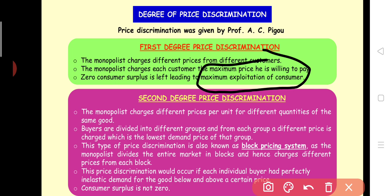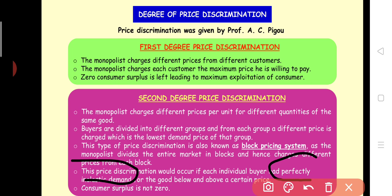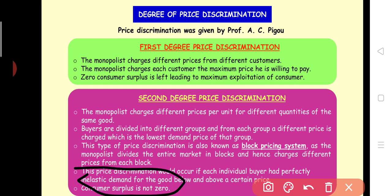Second degree price discrimination charges a different price per unit for different quantities — like a lower price for bulk purchase. This is called block pricing because the market is divided into blocks based on high demand and low demand. The basic condition for second degree is that demand must not be perfectly inelastic — otherwise consumers would not accept a high price. Consumer surplus is not completely zero in second degree; at least some remains.